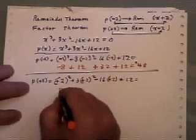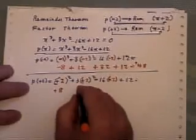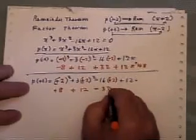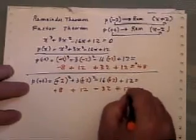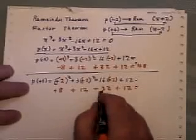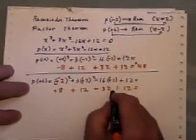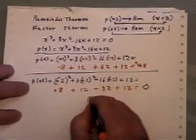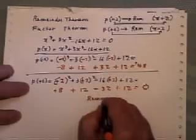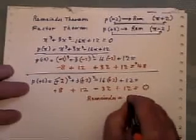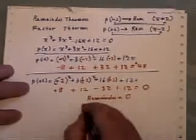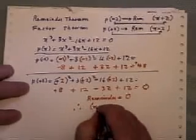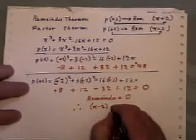This time it gives me plus 8, and plus 12, and minus 32, and plus 12. 8 and 12 is 20, take away 32 is negative 8, and plus 12 means 0. So what that tells me is I have a remainder equal to 0. Therefore, x minus 2 must be a factor.